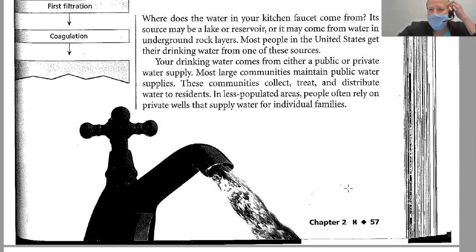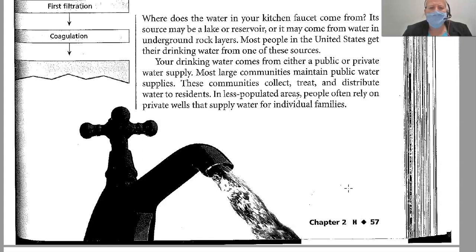Where does the water in your kitchen faucet come from? Its source may be a lake or reservoir, or it may come from water in underground rock layers. Most people in the United States get their drinking water from one of these sources. Your drinking water comes from either a public or private water supply. Most large communities maintain public water supplies that collect, treat, and distribute water to residents. In less populated areas, people often rely on private wells that supply water for individual families.